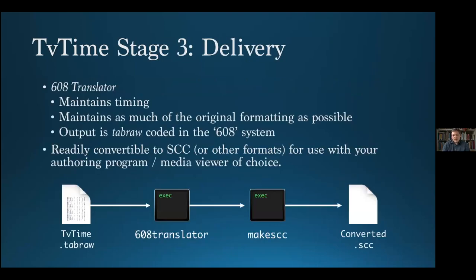We arrive at the delivery stage of the workflow with a fully validated Tab Raw file coded in the PBS TV Time system. However, since nothing reads captions from that system, an extra processing step is required: the 608 translator. It converts captions from the PBS TV Time system to the 608 system, while maintaining the timing of each caption and as much of the original formatting as possible. Its output is a Tab Raw file coded in the 608 system, which can then be converted into an SCC file. In our case, we use these SCC files to author DVDs, with which we generated the open captioned examples of the system.